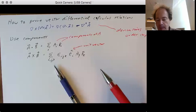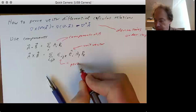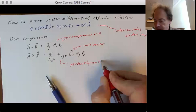Now, what is this epsilon i, j, k? This is the perfectly anti-symmetric tensor.